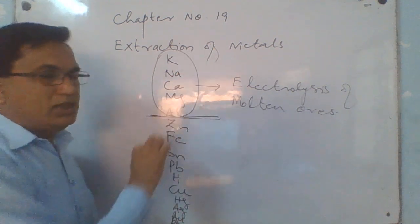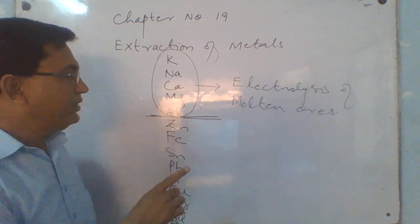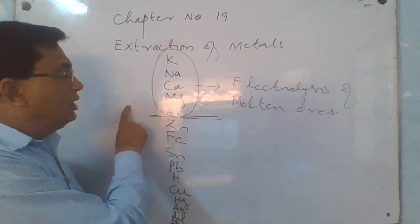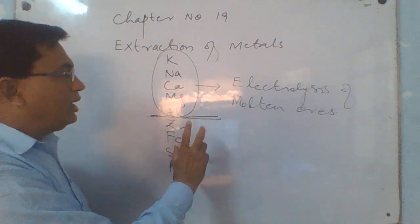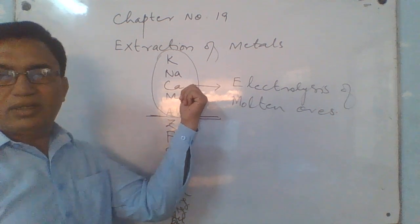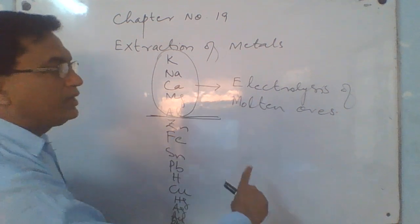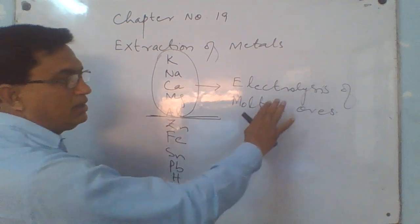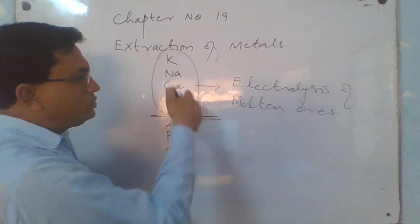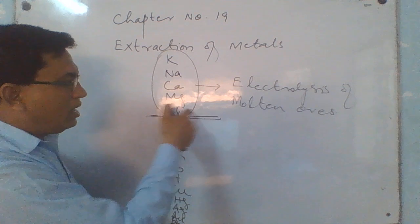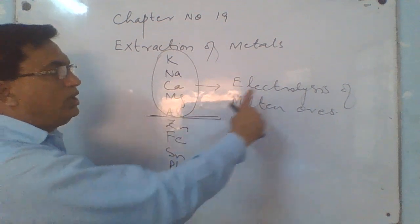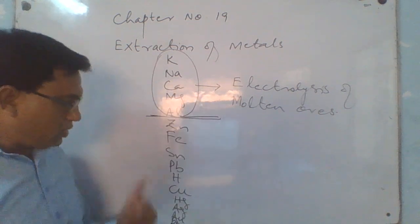These metals are too reactive; their reduction potentials are very low and they cannot be reduced quite easily. That's why normal reduction methods cannot be used to extract all these metals. Only the most powerful process — electrolysis — can reduce all these metal ions into their metallic form. That's why only the electrolysis method is used.